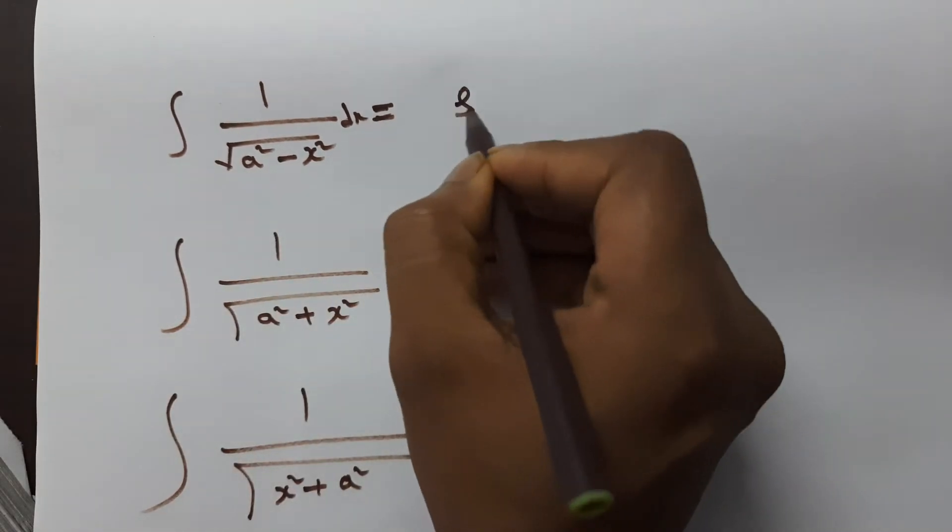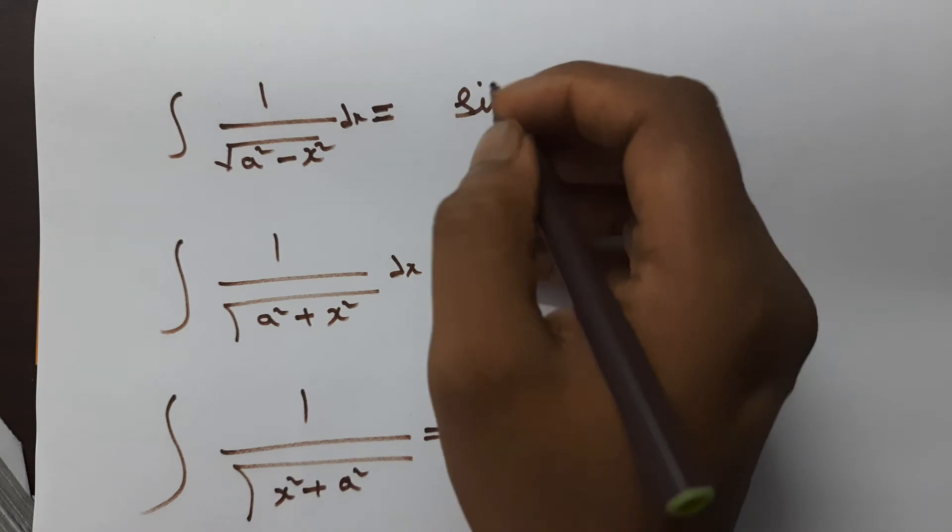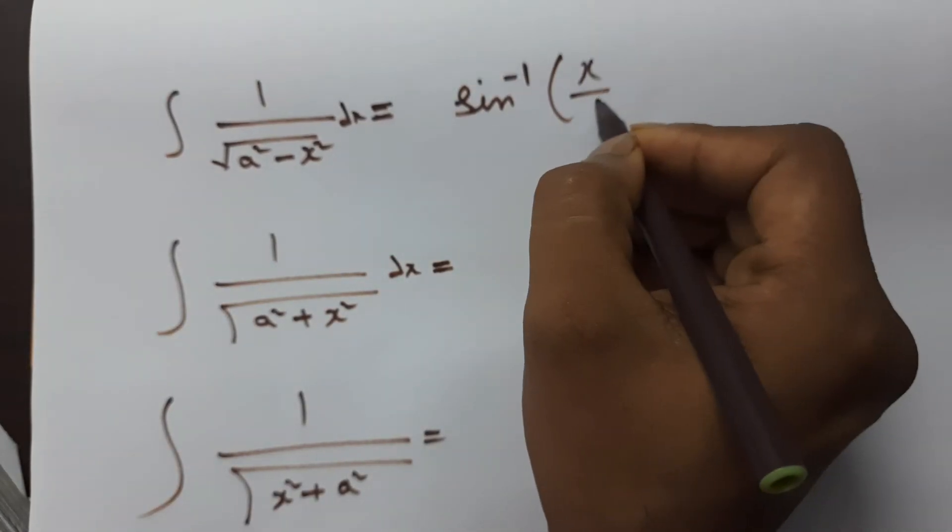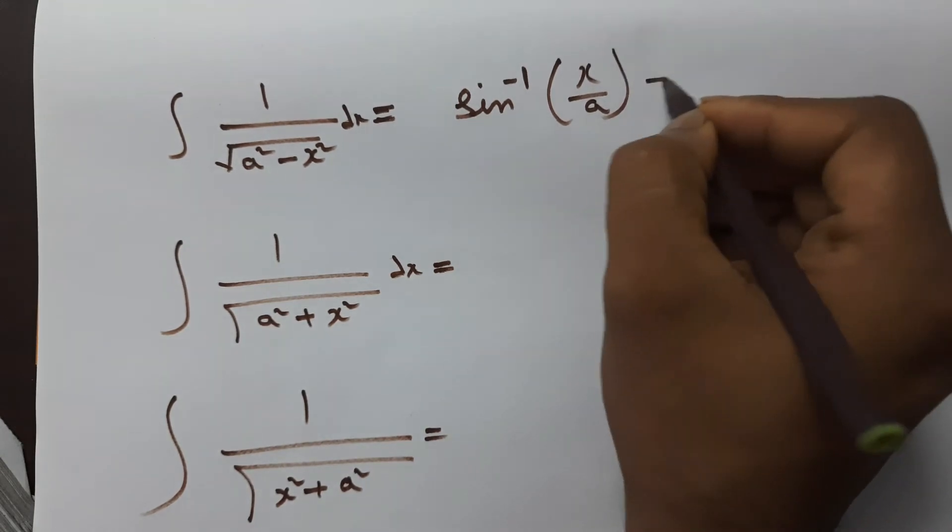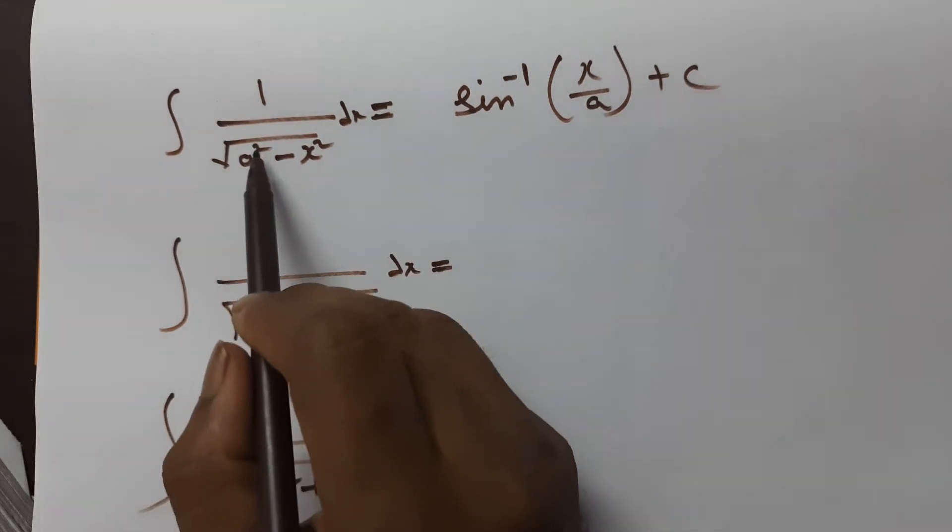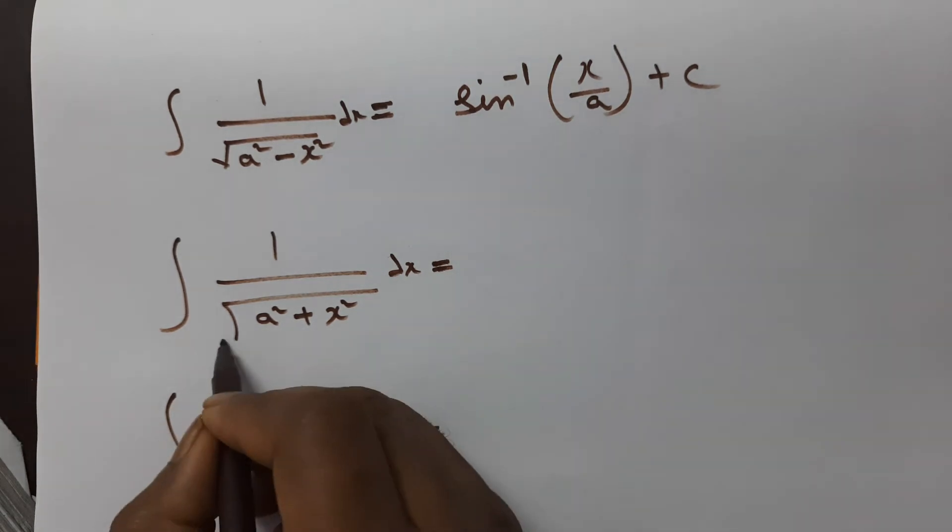A for sin, sin inverse function. x by a is common, x by a is common, plus c. That's it, simple. A is first, x by a is common, sin inverse function. That's it. Ok, that's it.